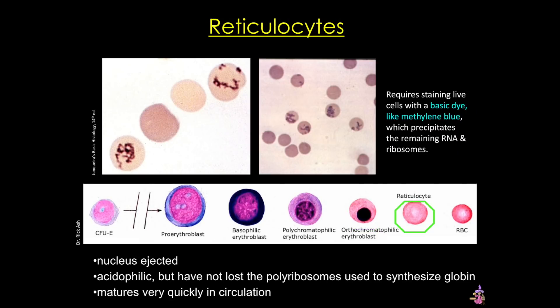Finally we have the reticulocytes, the last stage before the mature red blood cell. At this point the nucleus has been ejected but the cells still contain polyribosomes used to make globin, so they only stain with a basic dye. Because of this, and because they mature very rapidly once in the circulation, we don't see these in our Wright-stained blood smears. But reticulocyte counts are often done to determine whether red blood cells are being produced, and high counts can be indicators of pathology.